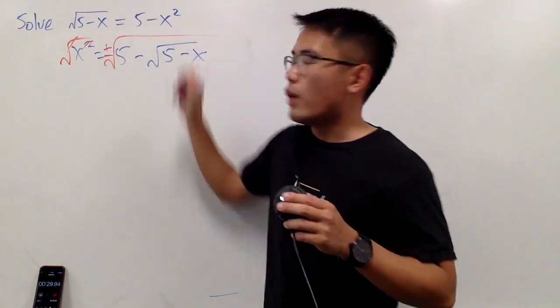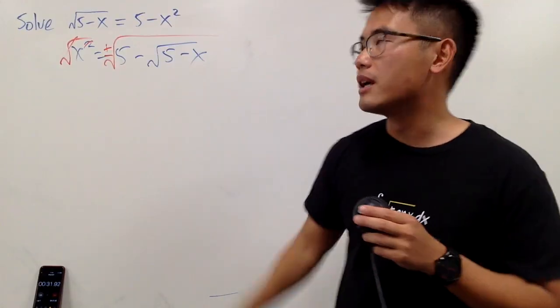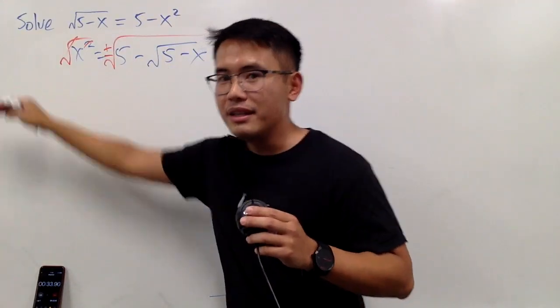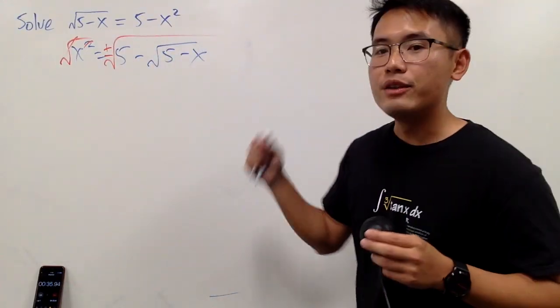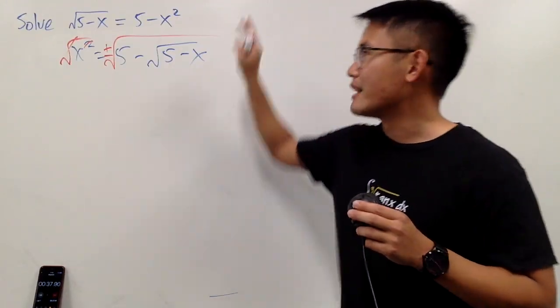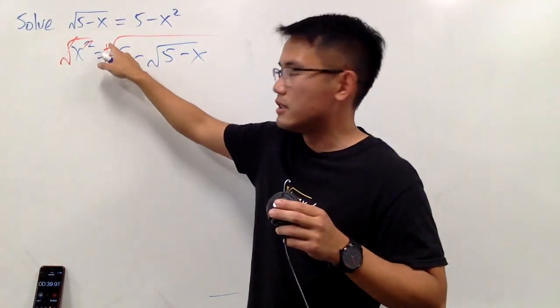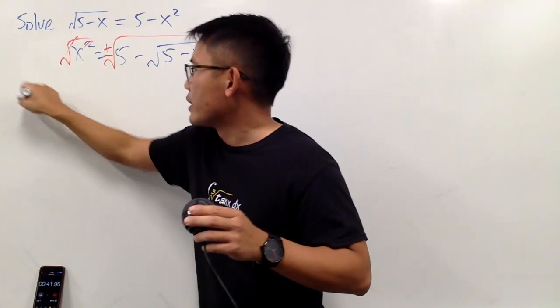This equation does have two solutions, because if you graph the left side, you get one curve, and if you graph the right side, you get another. You see two intersections, so it has two solutions. That's why you have to really consider the plus-minus.